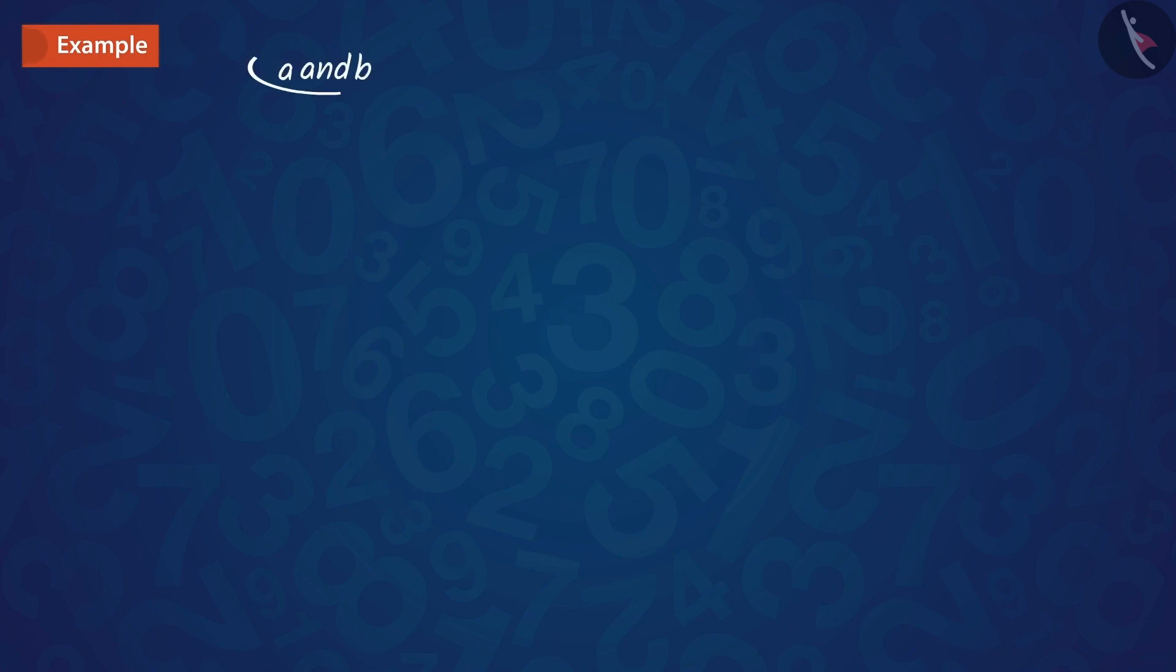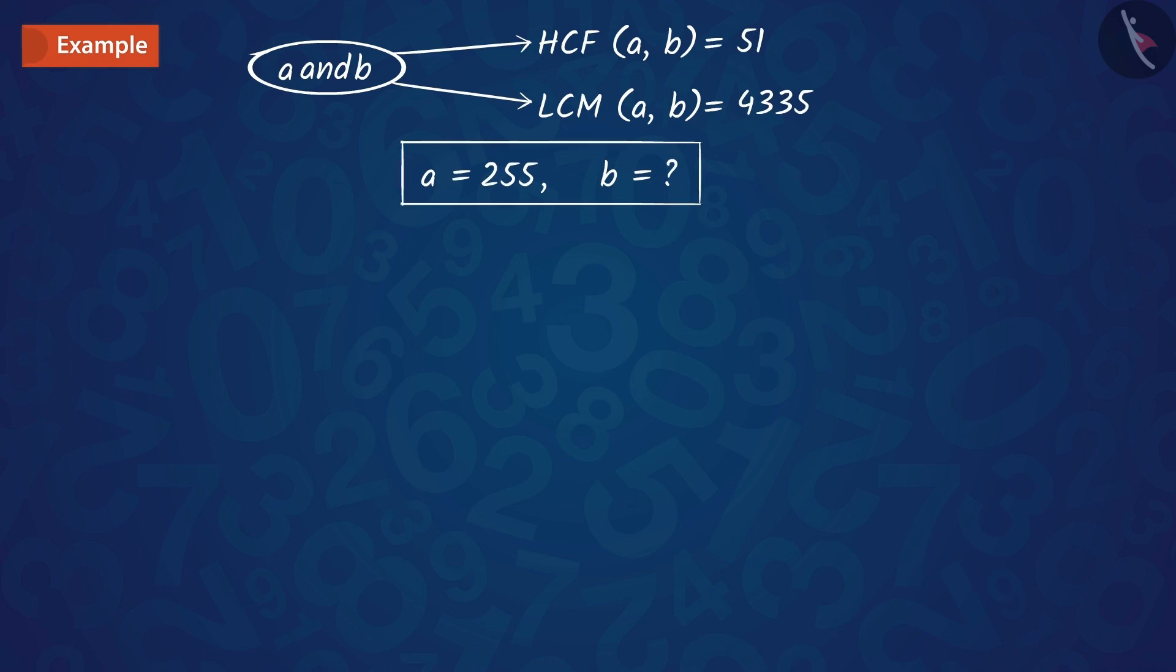The HCF and LCM of two numbers A and B are 51 and 4335 respectively. If A is equal to 255, find the value of B. Can you guess how the value of B can be found?